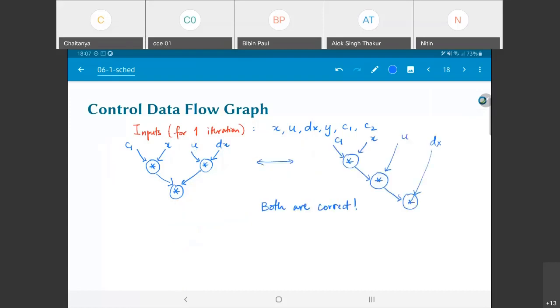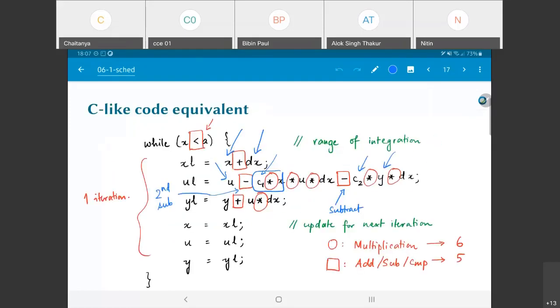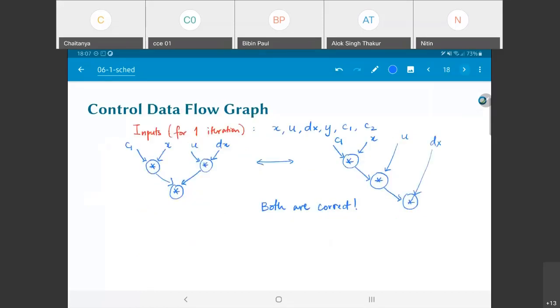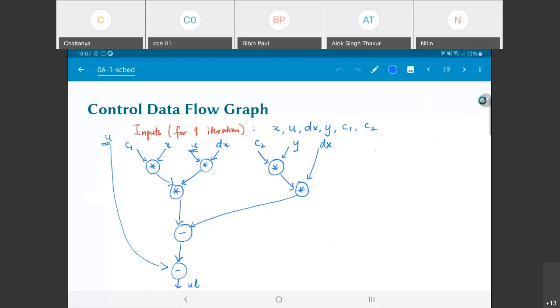What else do I need to do? I also need to do y_l equals y plus u into dx. So I will do one u into dx, plus y, and this gives me y_l.